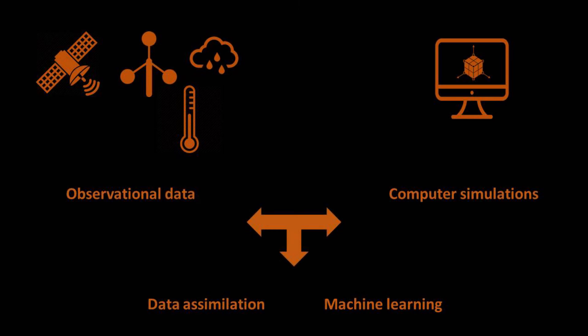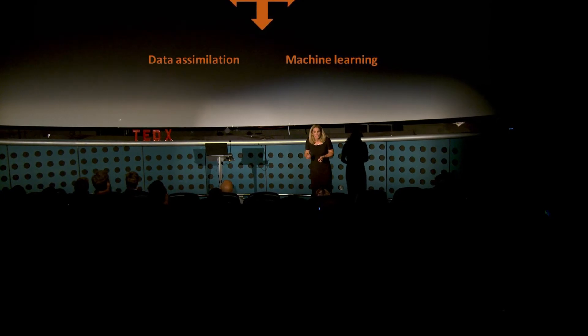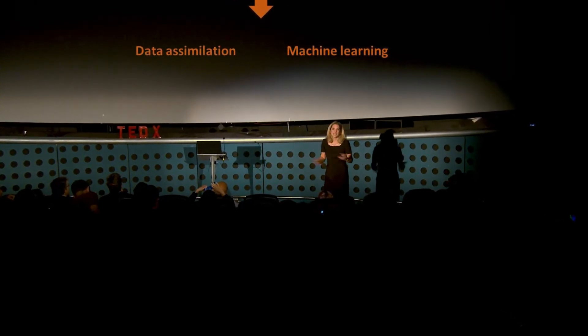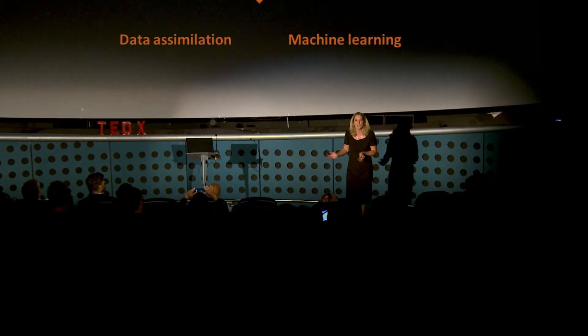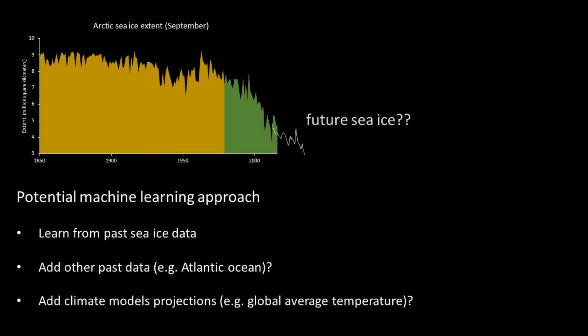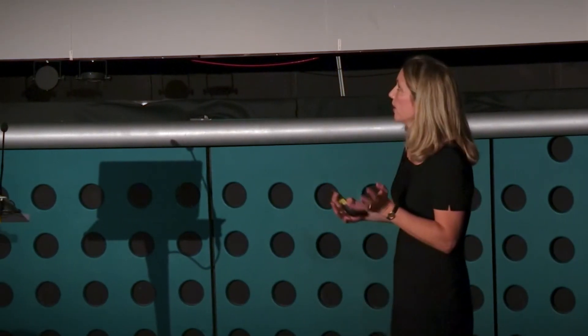One of the things that is really exciting is new techniques to meld together observational data and computer simulations, in particular using machine learning techniques — the same techniques helping us to automatically translate documents from Finnish to English or identify the image of a cat on the internet. We're using exactly these techniques to identify patterns in historical data and combine them with computer modelling to get a better understanding of current and future changes to our planet. For example, we've been looking at Arctic sea ice, something traditionally very difficult to predict, and seeing whether we can use past data — from ship's records and other sources — together with climate model information to improve our projections.